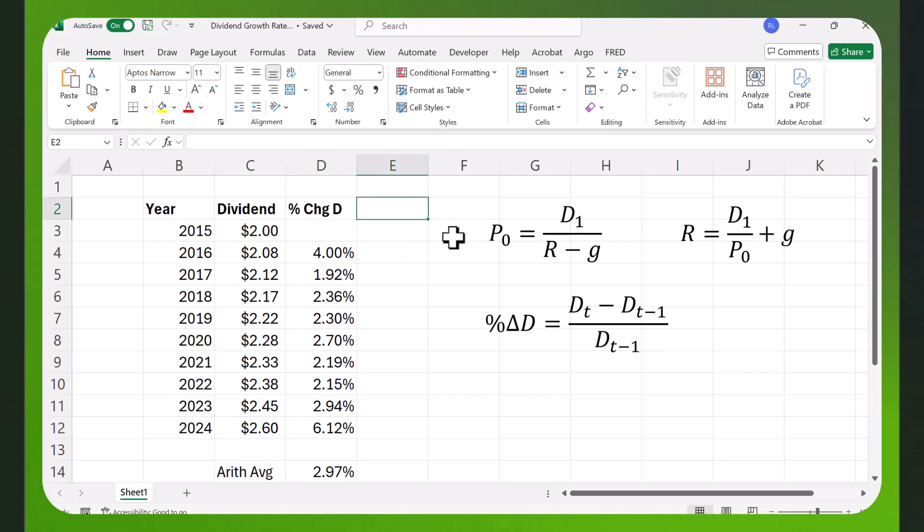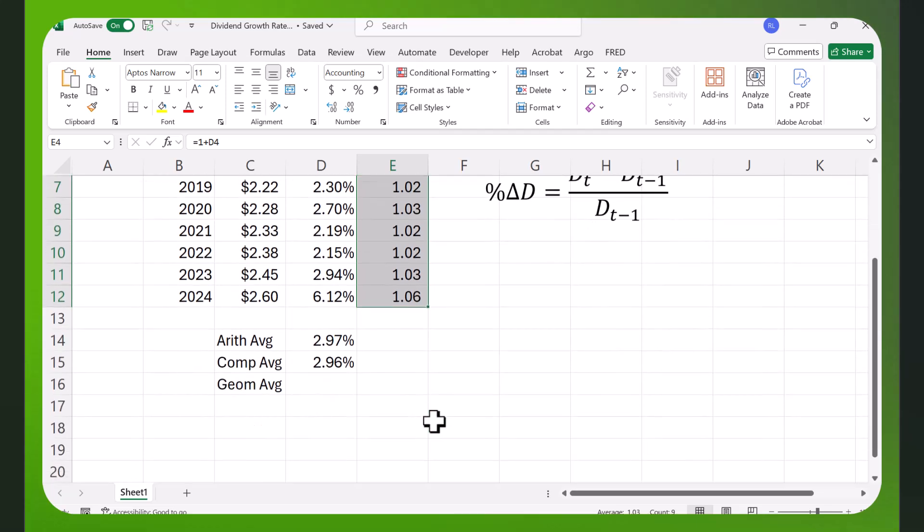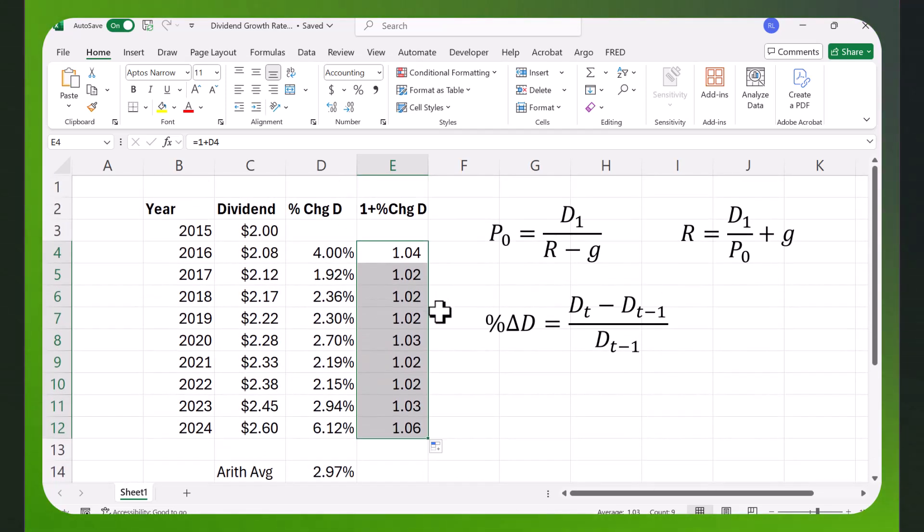To get the geometric average, you need 1 plus the percentage change in D. We're going to say equals 1 plus this. It gives it in percent form, but 104% is the same as 1.04. So let's just change the format here. I'm going to copy this down here. Now that I have these, I can find the geometric average.